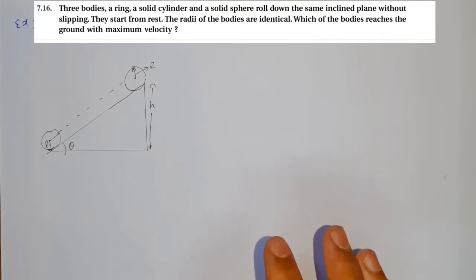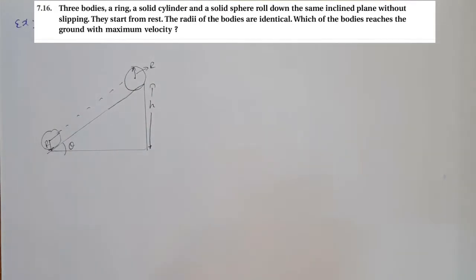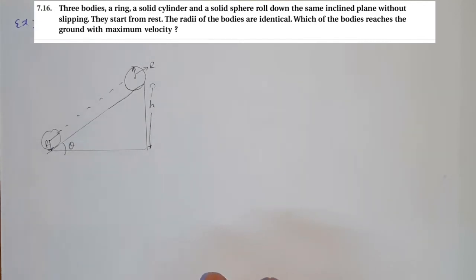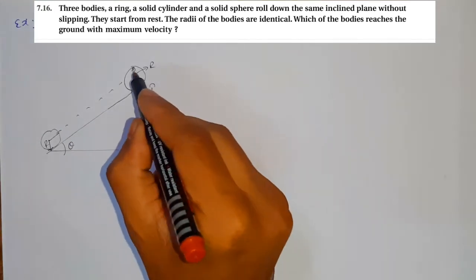Three bodies — a ring, a solid cylinder, and a solid sphere — roll down the same inclined plane without slipping. They start from rest. The radii of the bodies are identical. Which body reaches the ground with the maximum velocity?